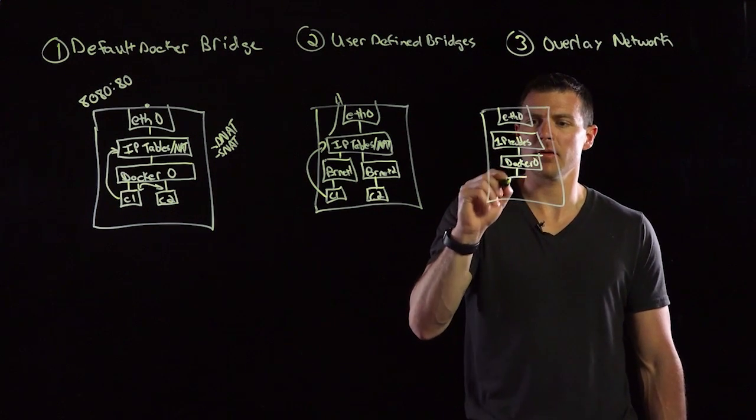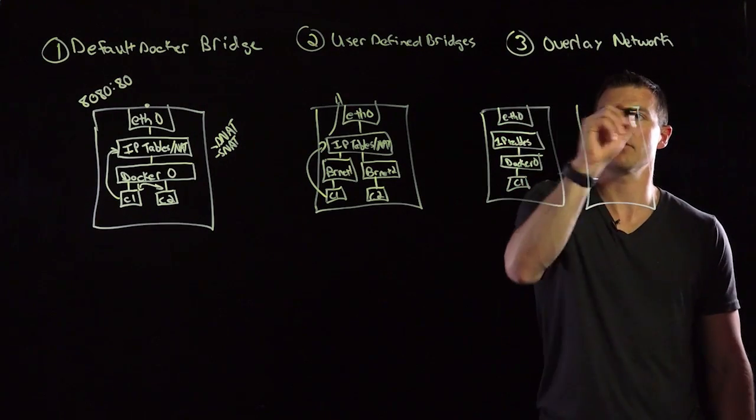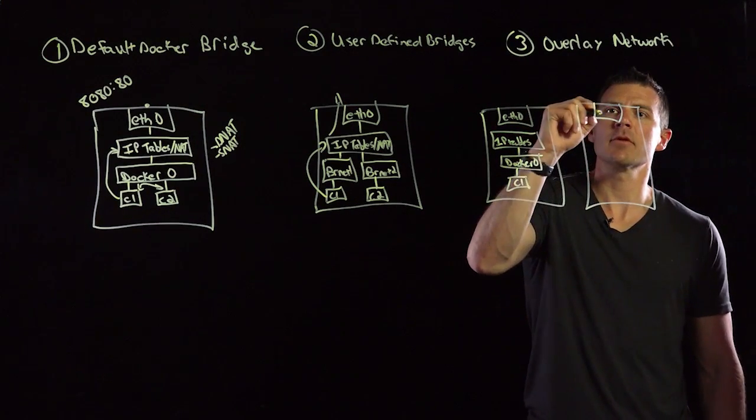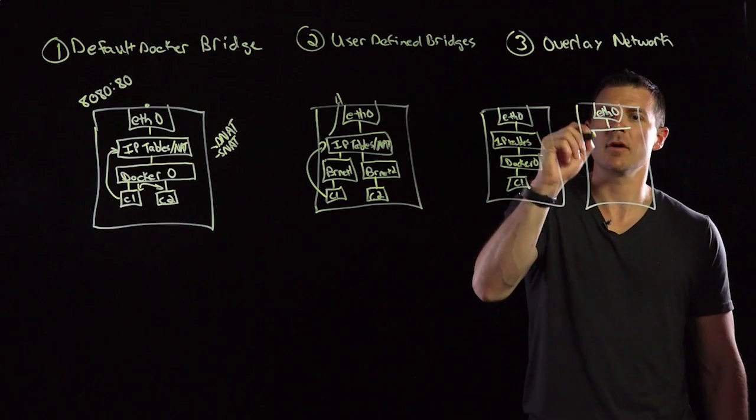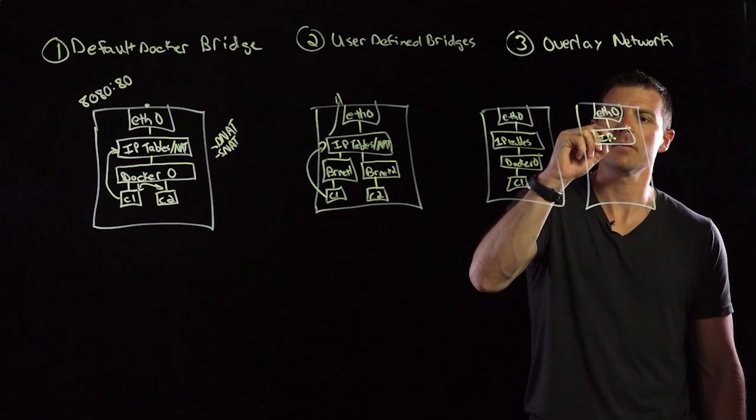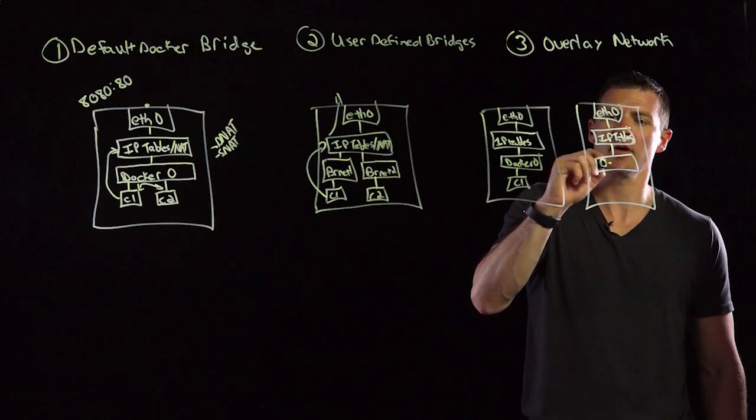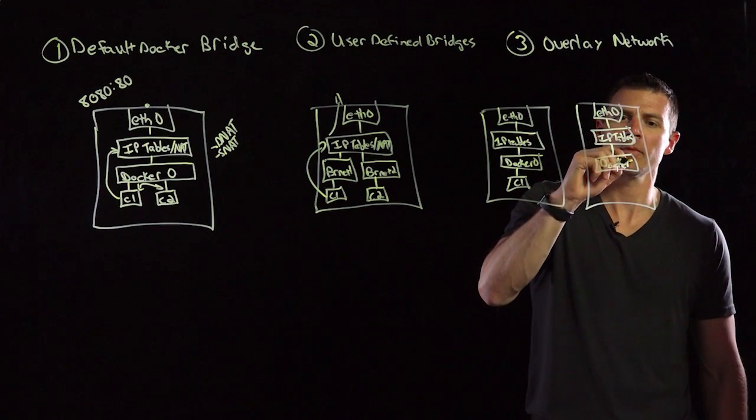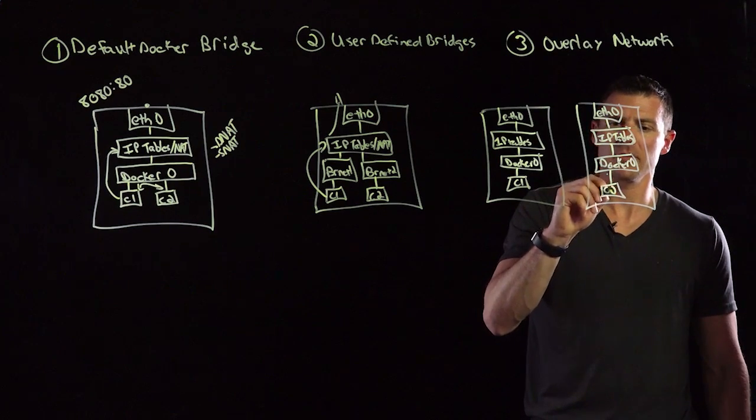And I'll hang a container off of that. And I'll draw one more host. So again, we'll draw Ethernet zero. That's going to go down to IP tables. Docker zero. And we'll draw one container off of there, container two.